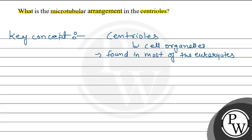The centrioles' main function is they help in cell division and they form asters. So their microtubular arrangement is 9 plus 0.